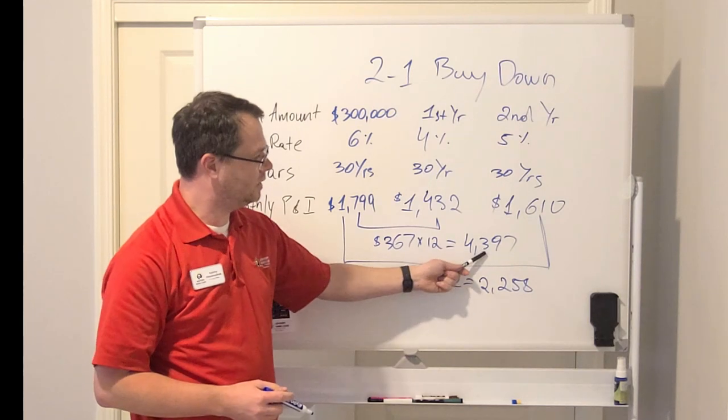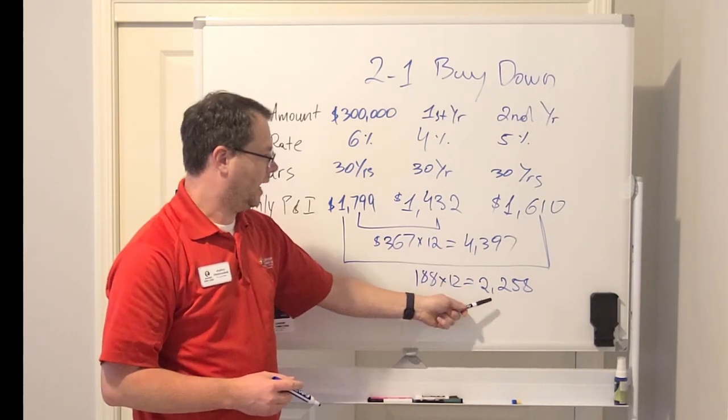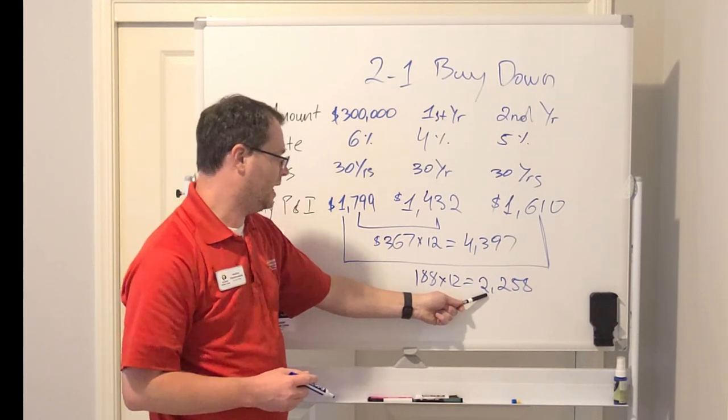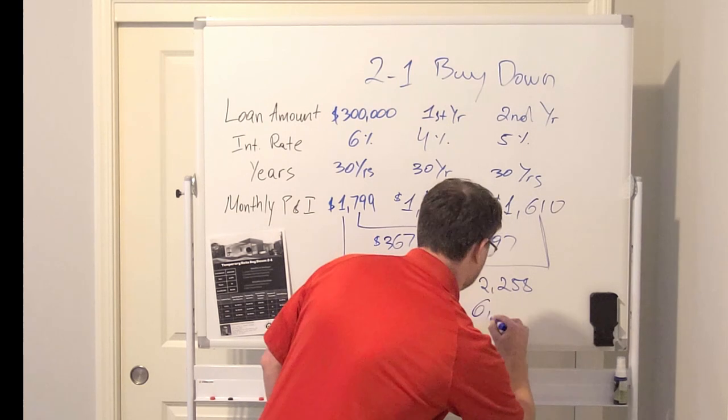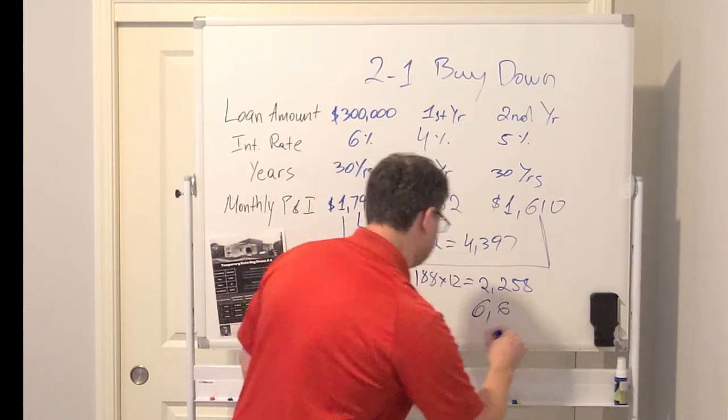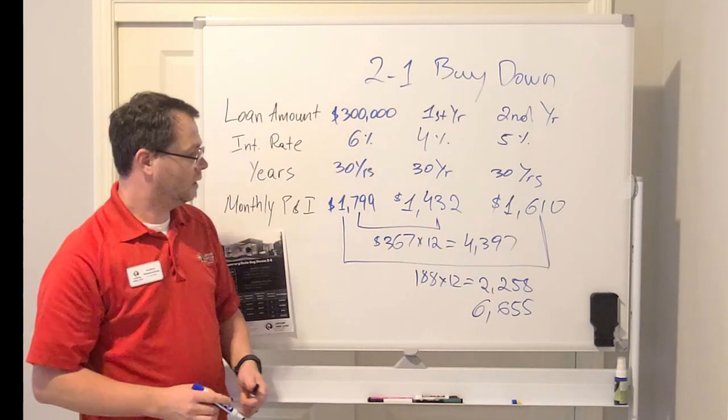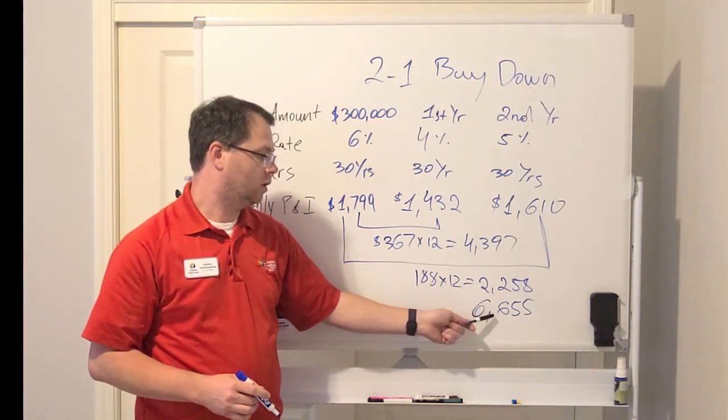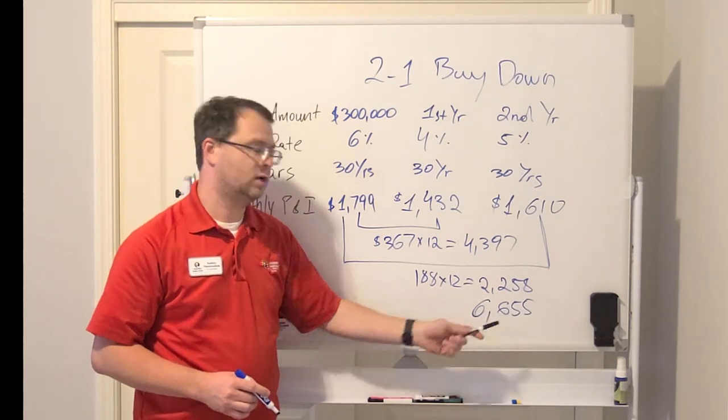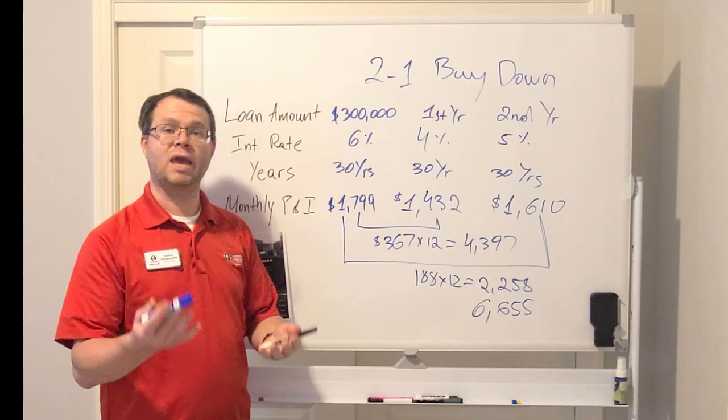Now, if you add these two together, $4,397 and $2,258, we have a shortage of $6,655. So the lender is short of $6,655. Now, who is going to pay for it?